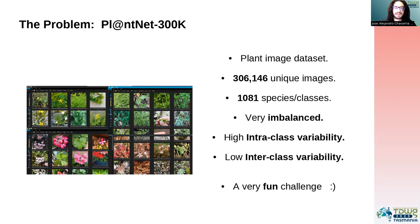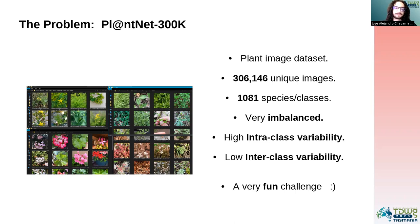So it has a lot of unique images. It has 1,081 species. It is very imbalanced — actually, I think 80% of the images belong to 11% of the classes. And it has all these problems I've mentioned before. It is a very fun challenge to take on.